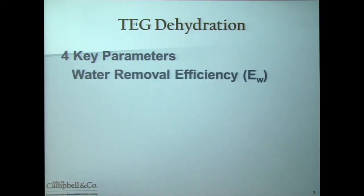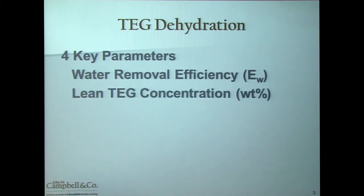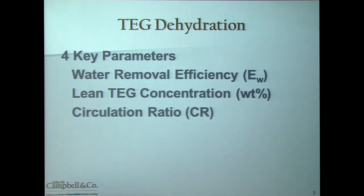With TEG dehydration, we look at four key parameters. The first is water removal efficiency — simply how much water you're removing in the TEG contactor compared to what's coming in. The second is lean glycol concentration; the leaner you make it, the more operating expense it's going to cost you. The third is your circulation ratio: how much lean TEG you have to circulate in the system in order to remove the water from the feed gas.